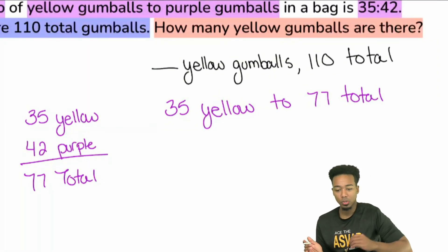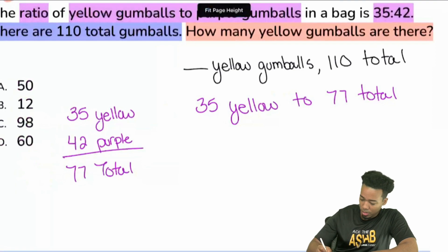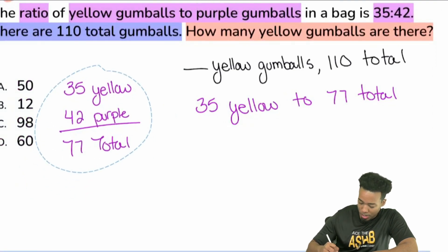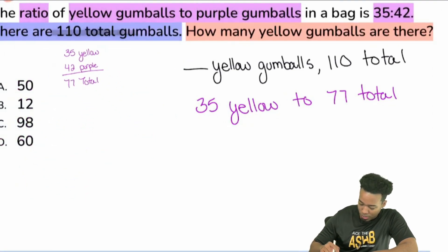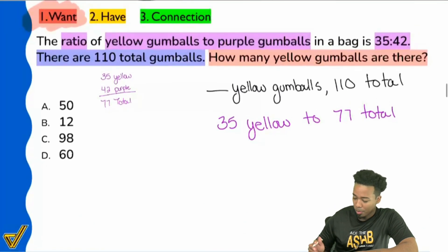If we add this up, we end up getting what? 77. And that's 77 total. So for anybody who's confused, this is the part you really want to pay attention to. When it comes to proportion questions that have a total in there, you just want to make sure that you know how to get the total for either comparison if you need it. In this case, we did need it. And so we see here that we're going to get rid of the 42 purple and we're going to put in 77 total.